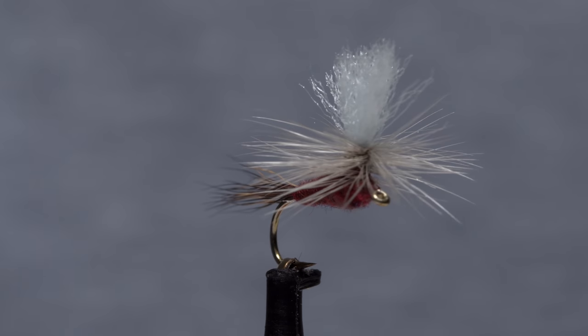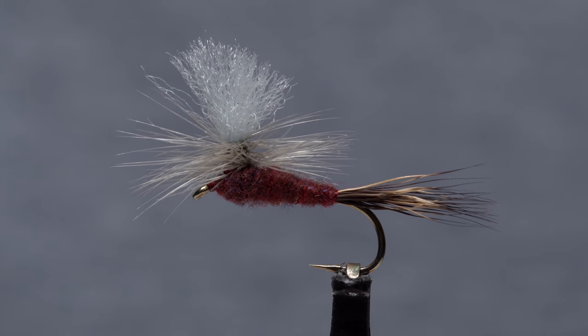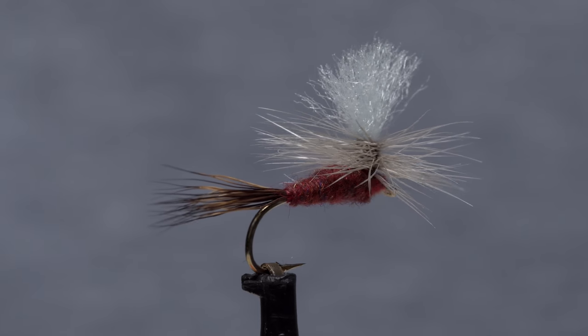This Isonicia Parachute is one of my guilty pleasure fly patterns. It's big, easy to tie, and towards dark throughout most of the summer and fall, the thing flat out catches fish.